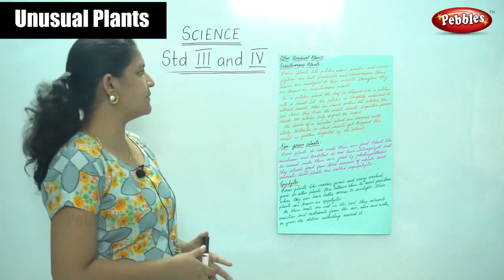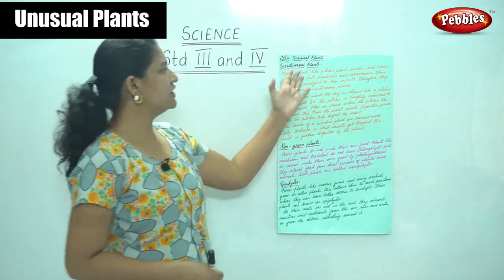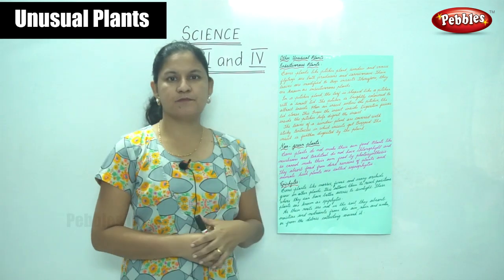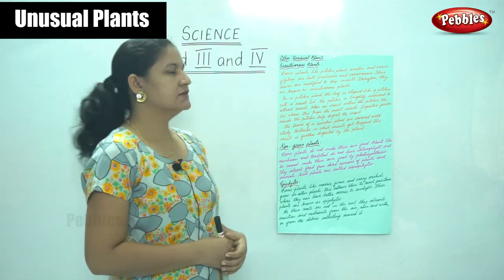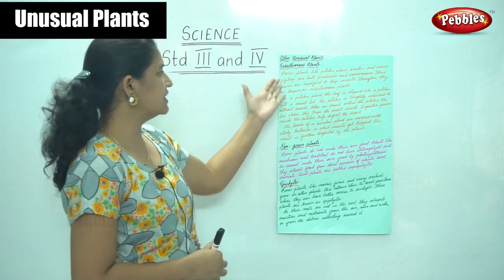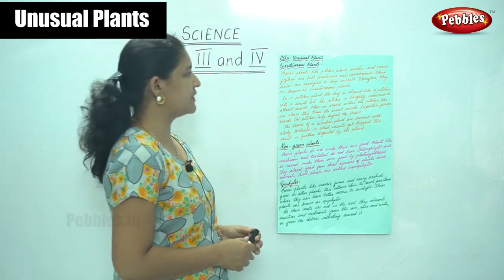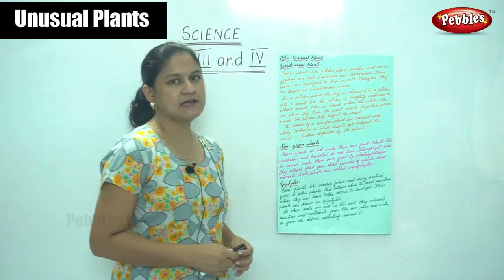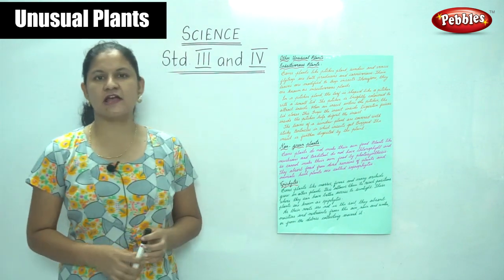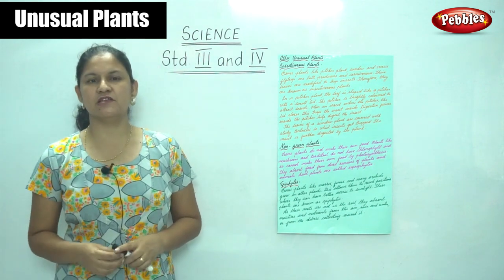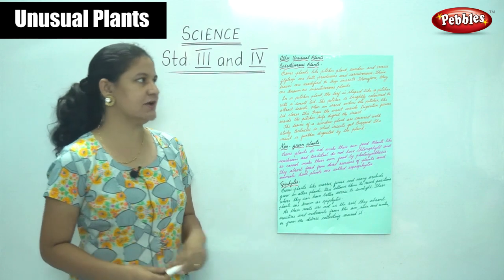Next we are going to see about unusual plants. We have the insectivorous plant, also known as the venus flytrap.